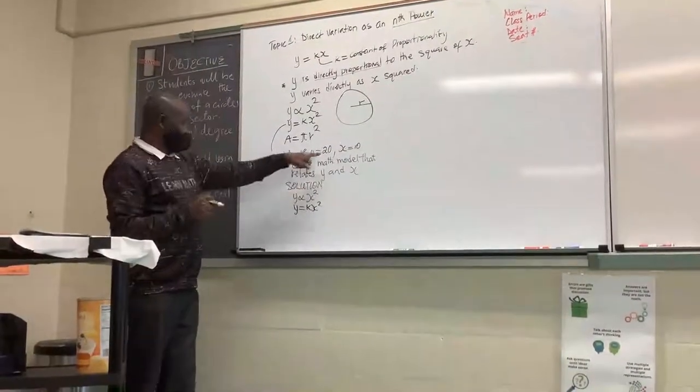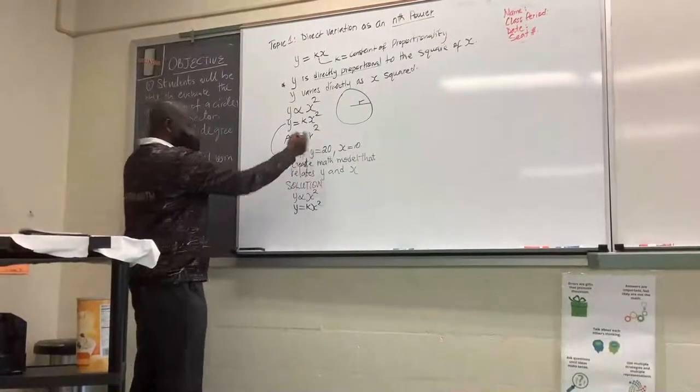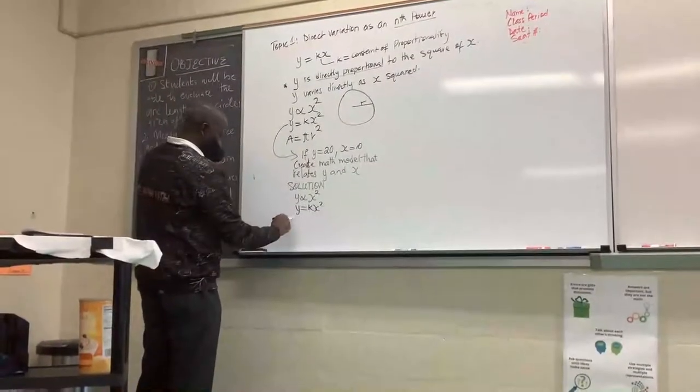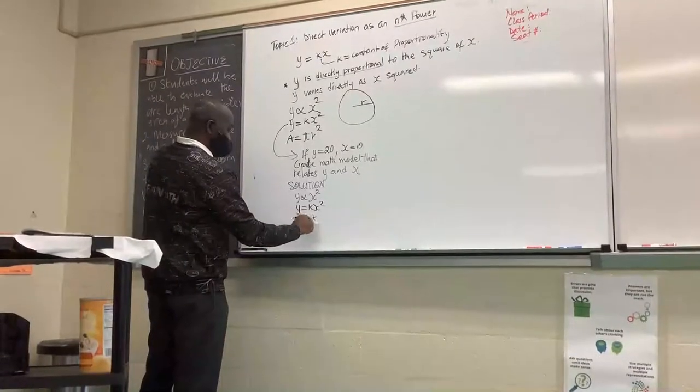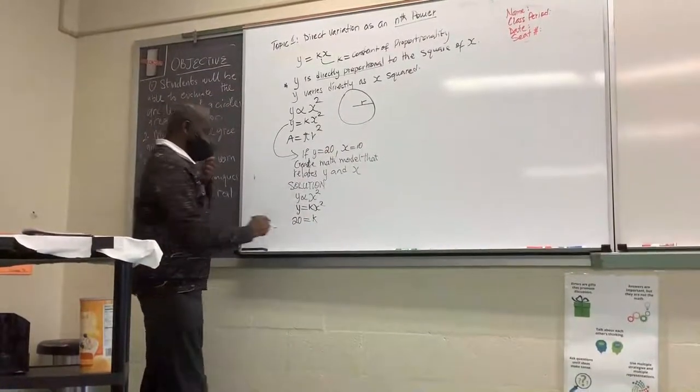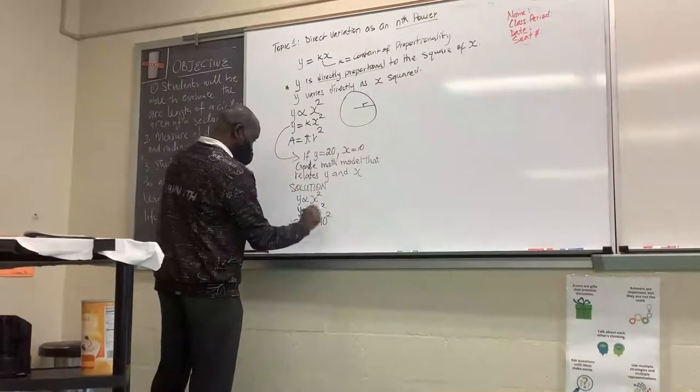Now, if y is twenty, all we got to do is substitute the value of y to be twenty. So we have twenty is equal to k. X is ten, right? Ten squared.